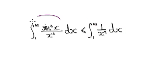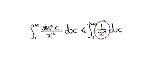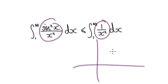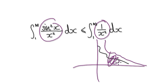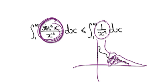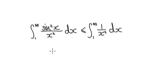Therefore, this must converge, because this is bigger than this. So if you have a function that's bigger than another function — well, if the area of the big function converges, then the area of the small function will have no choice but to also converge.